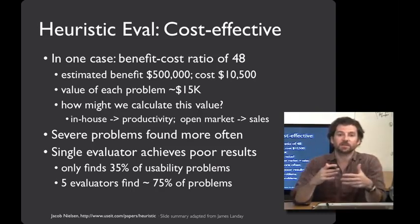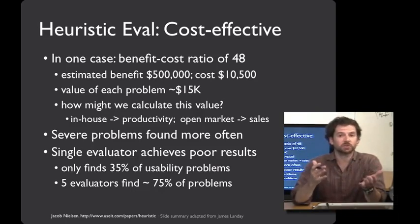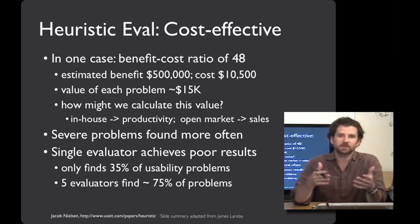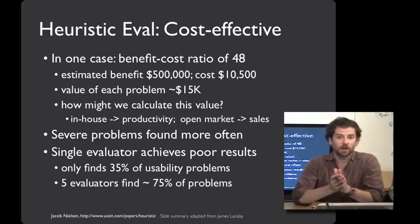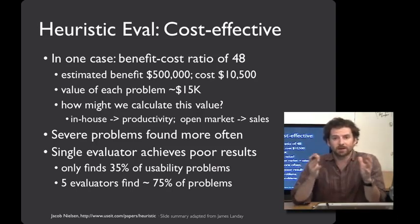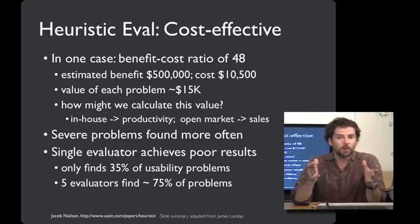One thing we can get from that graph is that evaluators are more likely to find severe problems, and that's good news. With a relatively small number of people, you're pretty likely to stumble across the most important stuff. However, even the best single evaluator found only about a third of the problems in the system. That's why ganging up a number of evaluators — say five — is going to get you most of the benefit that you'll be able to achieve.